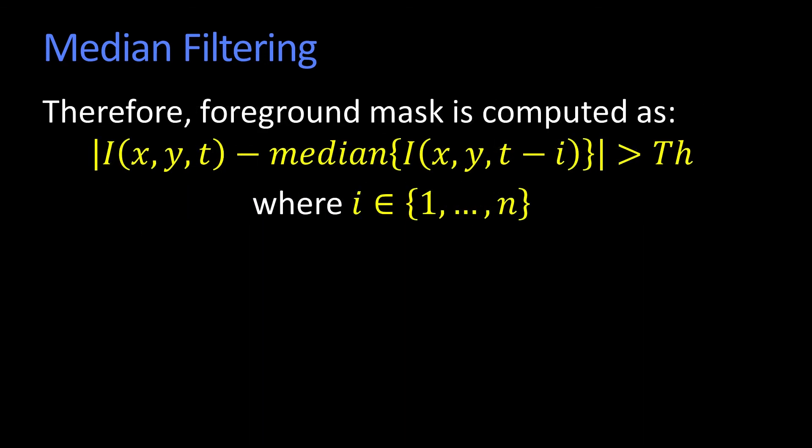So now your foreground mask is, we just take the current image, and we subtract out the median of the last n frames. And again, threshold.